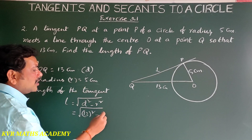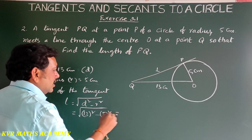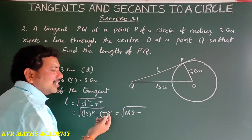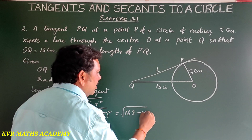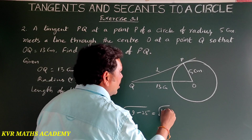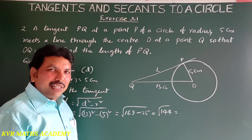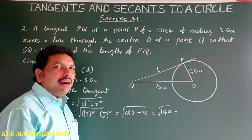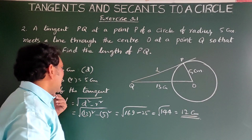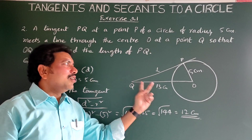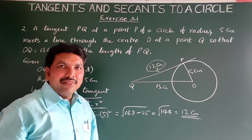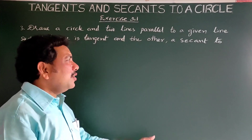That equals root of 13 squared minus 5 squared, which is root of 169 minus 25, that is root of 144. This gives plus or minus 12, but we take only the positive value, so the length of the tangent is 12 centimeters.